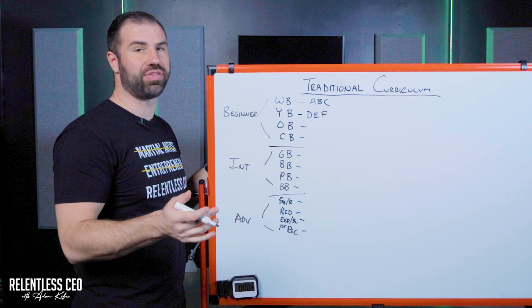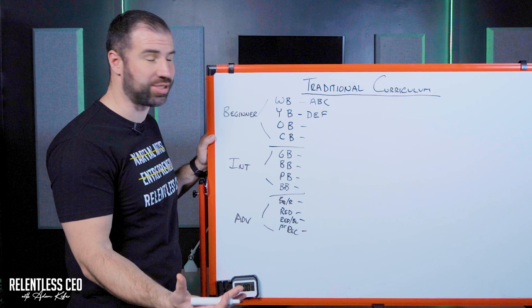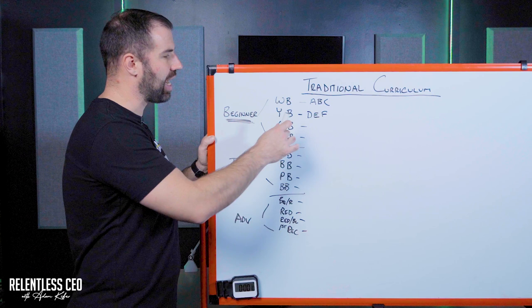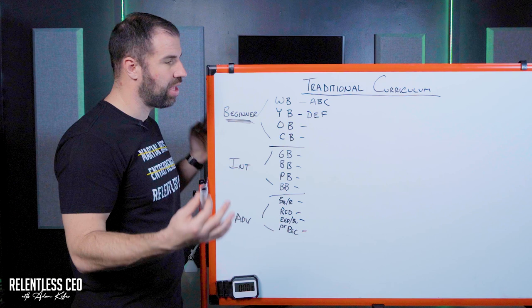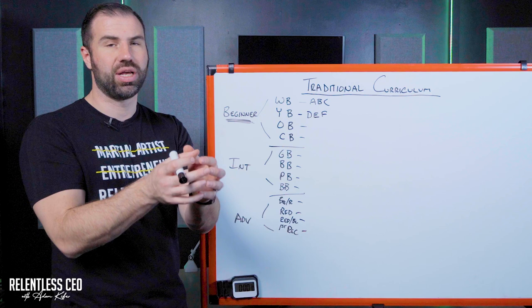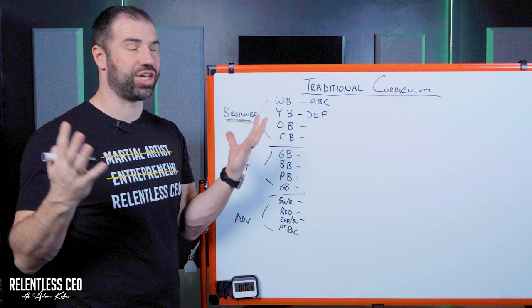Many of you watching this, even if you're doing rotating curriculum now, probably came up through the belt system when you were younger through something similar to this. If not, whoever your instructor was, they were ahead of their time — kudos to them. When we look at this, there are a few problems. Number one, if this is my beginner class, I now have four groupings of students: white belts, yellow belts, orange belts, and camo belts — all doing different curriculum. Which means if I'm the only instructor on the mat, I have to go spend time with the white belts, then move over to the yellow belts.